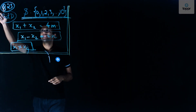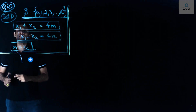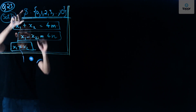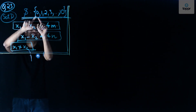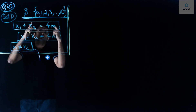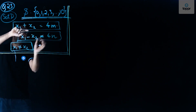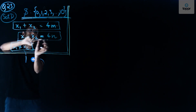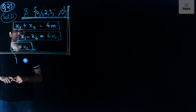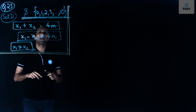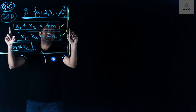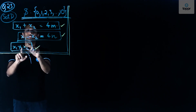We're dealing with question number 23 of set D of the IIT JEE 2017 main paper. We have a set consisting of whole numbers from 0 to 10, and we need to take two different numbers such that their sum is a multiple of 4 and their absolute difference is also a multiple of 4, where x1 is not equal to x2.